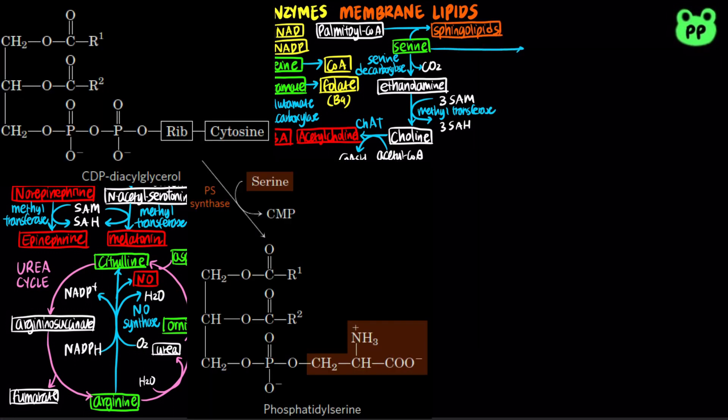Serine combines with CDP-diacylglycerol to form phosphatidylserine, abbreviated as PS, catalyzed by phosphatidylserine synthase, abbreviated as PSS.